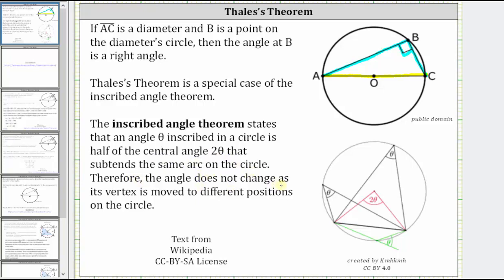Therefore, the angle does not change as its vertex is moved to different positions on the circle. Looking at the diagram on the right, the central angle is the angle two theta, and the inscribed angles are theta here and here. Notice how all three angles subtend the same arc, and therefore the inscribed angle is half the measure of the central angle.